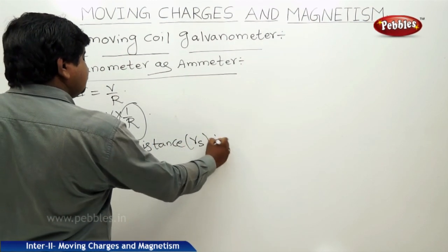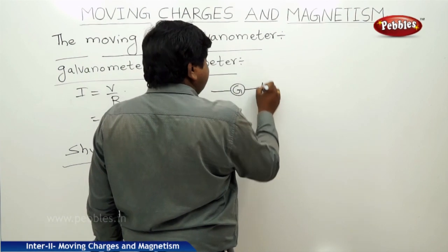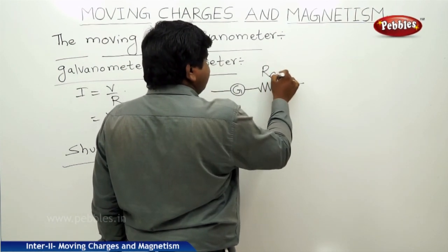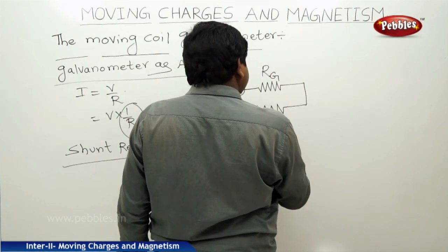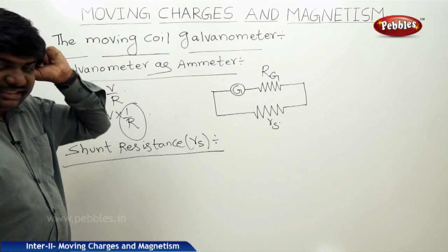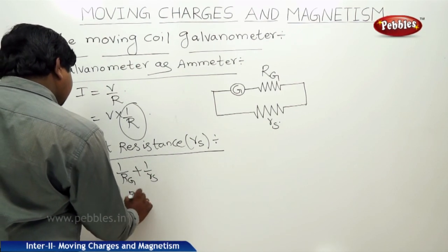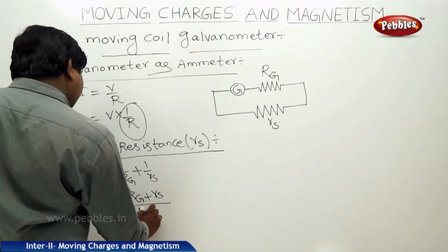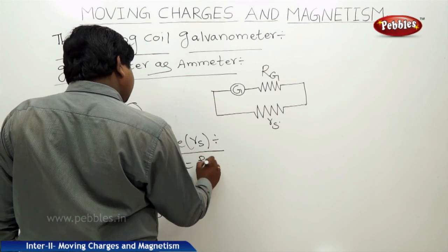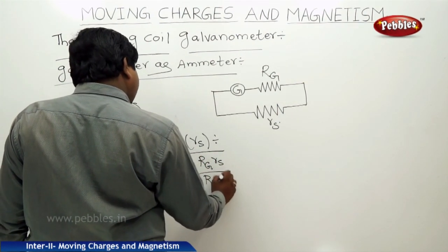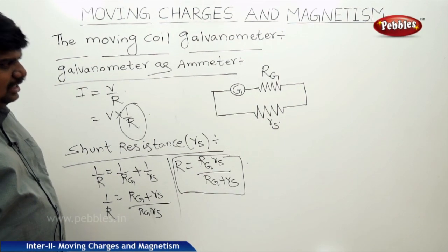The shunt resistance R_s is connected in parallel with the galvanometer resistance R_g. The effective resistance is given by 1/R equals 1/R_g plus 1/R_s, which gives R_g plus R_s divided by R_g·R_s equals 1/R. Therefore R effective equals R_g·R_s divided by R_g plus R_s. When the shunt resistance is connected in parallel, the galvanometer acts as an ammeter.